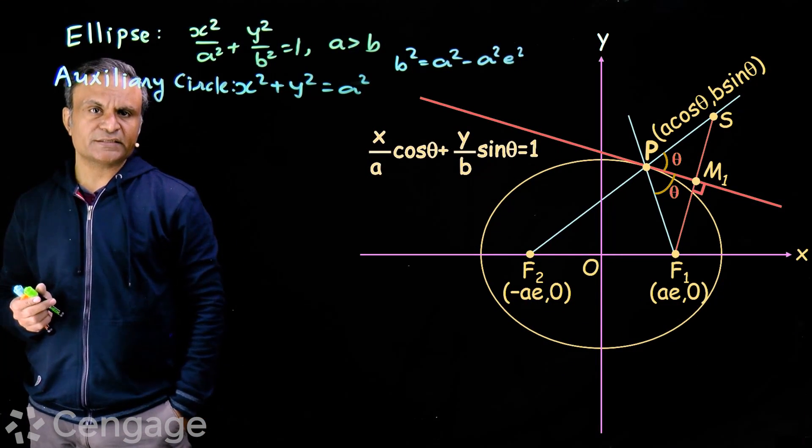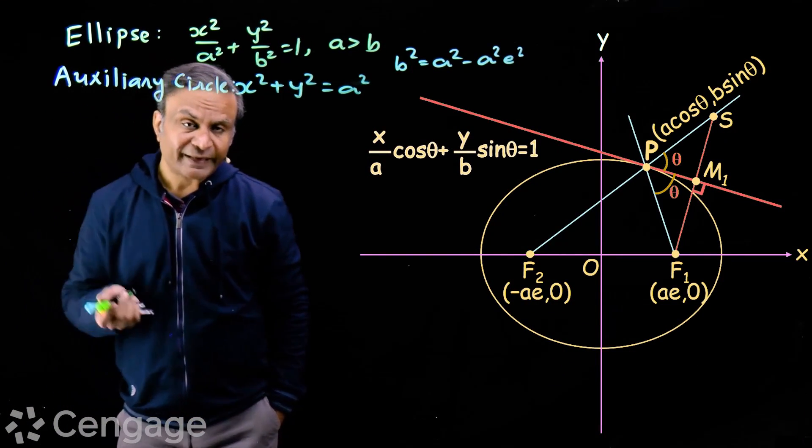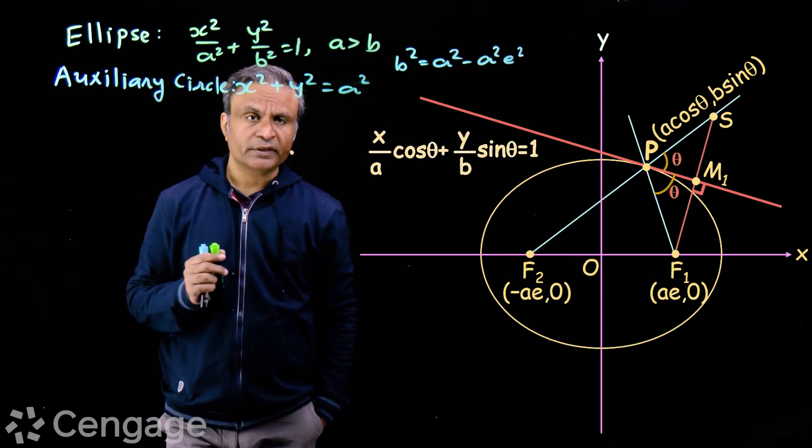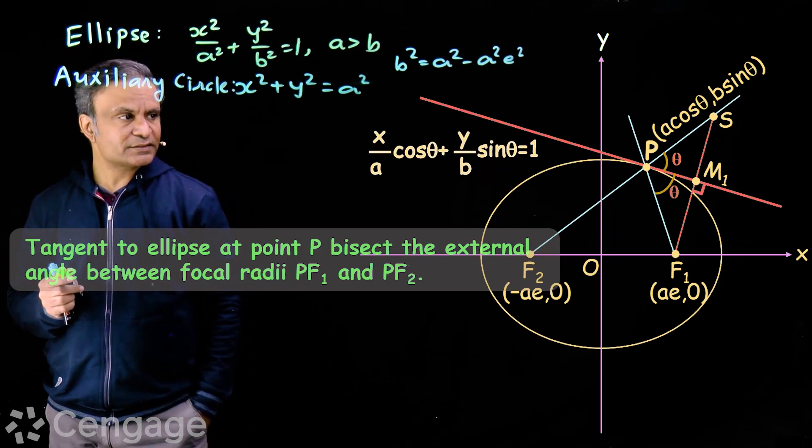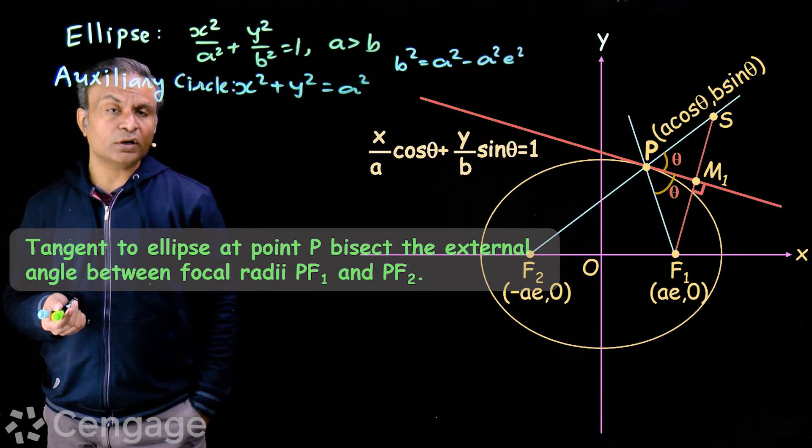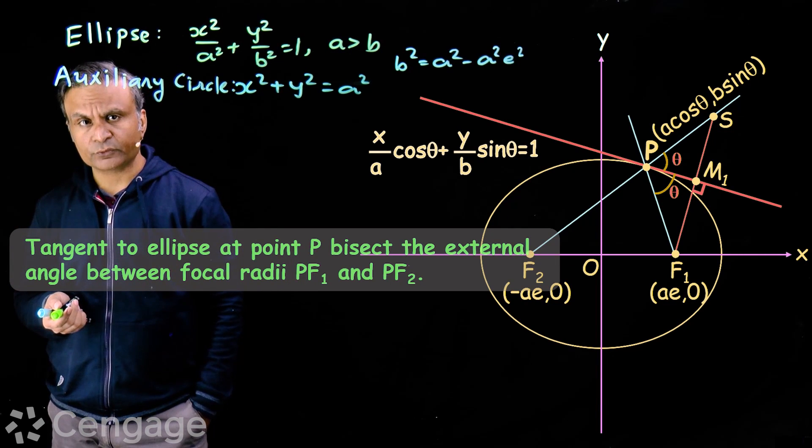Now we have one very interesting property of tangent which defines the reflection property of ellipse. The property is tangent to ellipse at point P bisects the external angle between focal radii PF1 and PF2.